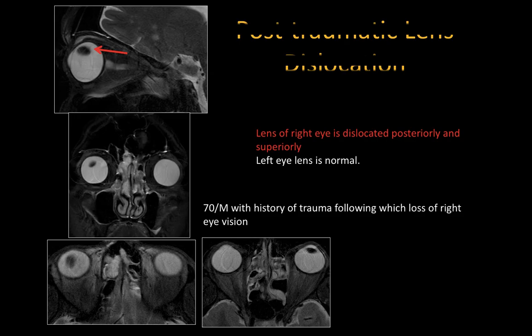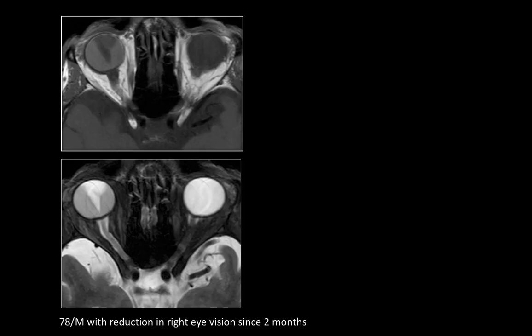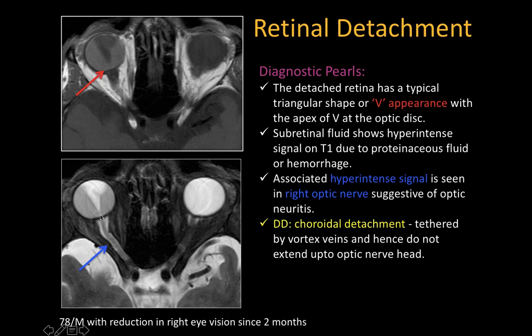This 75-year-old male with reduction in right eye vision: a V-shaped membrane is seen — V-shaped retinal detachment, with the apex located at the optic nerve head. There is also abnormal T2-hyperintense signal in the entire optic nerve with prominence of the subarachnoid space, indicating chronic optic neuritis. Subretinal fluid shows T1 and T2 hyperintense signal, suggestive of proteinaceous material or hemorrhage. Choroidal detachment differs: it is tethered by vortex veins and will not reach the optic nerve head.